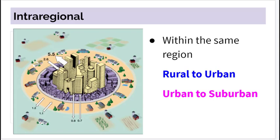We also have intra-regional migration, which is within the same region. This includes rural-to-urban movement — from farm to city. Later in our urban unit, we'll look at urban-to-suburban migration, especially in post-World War II America, when people felt cities were too crowded and crime-filled and wanted to pursue the American dream — a house, garage, and 2.5 children in the suburbs.